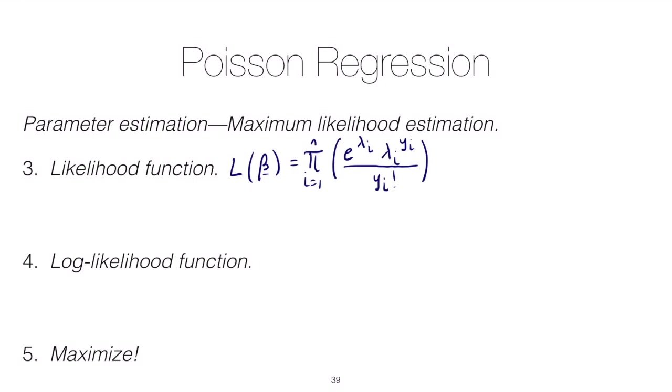So notice here I have the likelihood as a function of beta. You might ask, well where did the beta show up in this function?